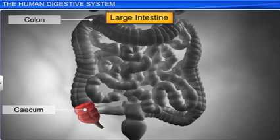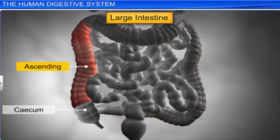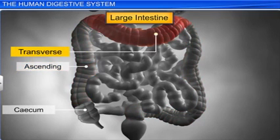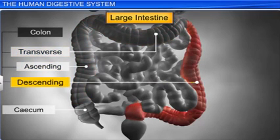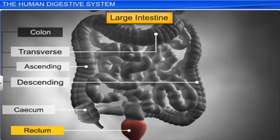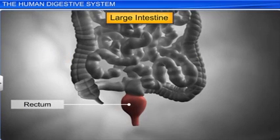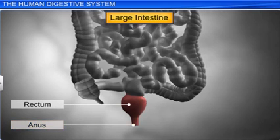The cecum opens into the colon, which is divided into an ascending, a transverse, and a descending colon. The descending part of the colon leads to the rectum, a bag-like structure which stores undigested food as fecal matter till it can be passed out. The rectum leads to the last member of the alimentary canal, the anus, which expels the undigested food remains.